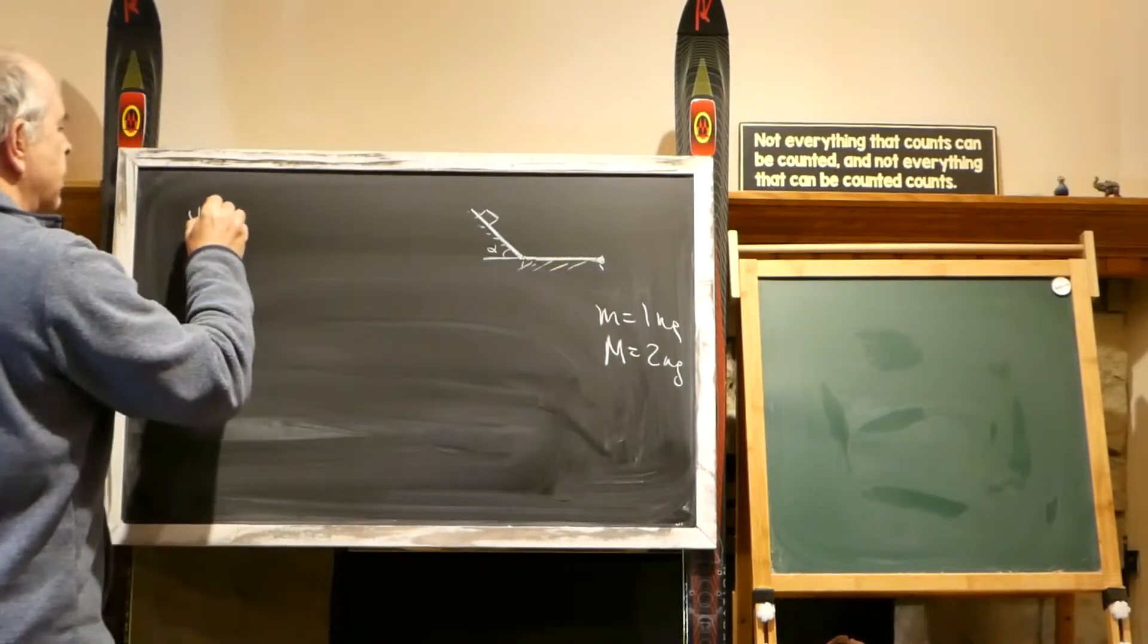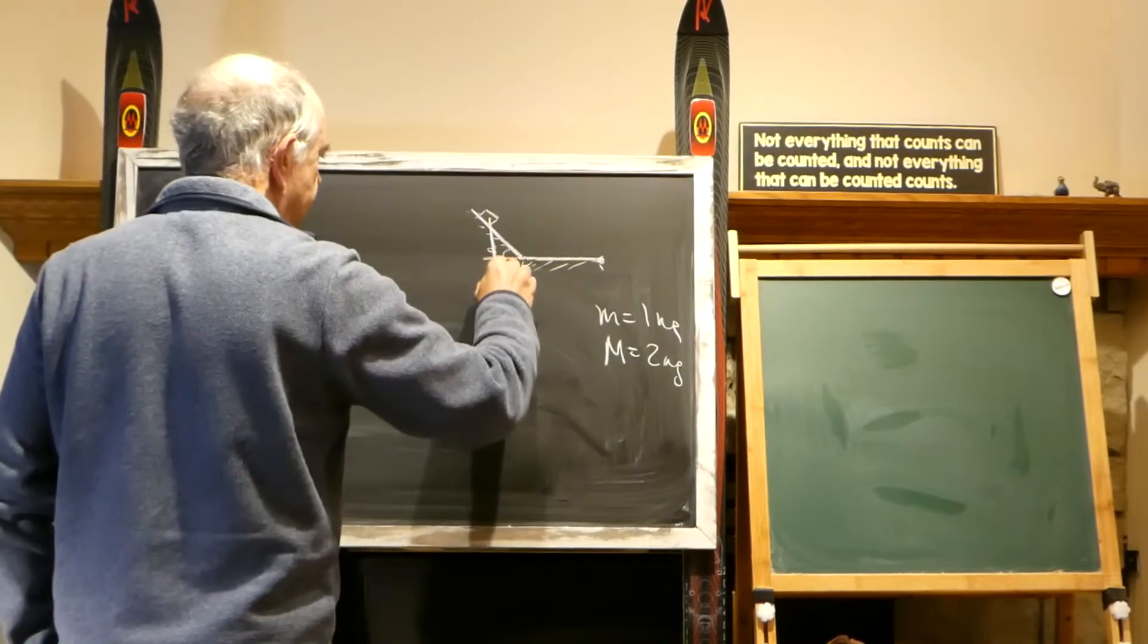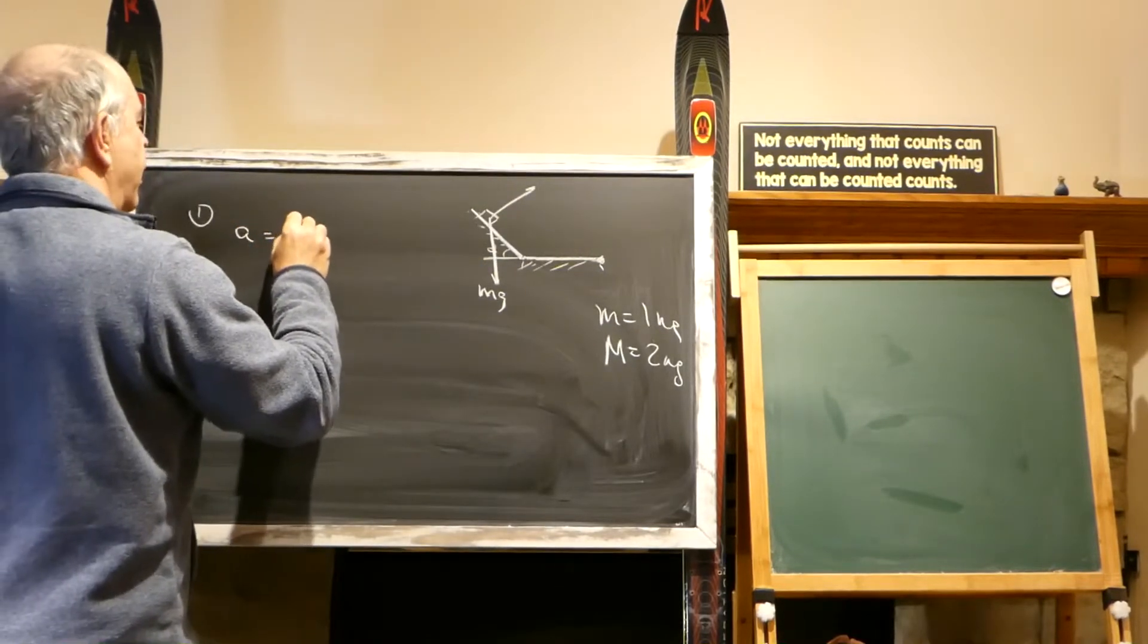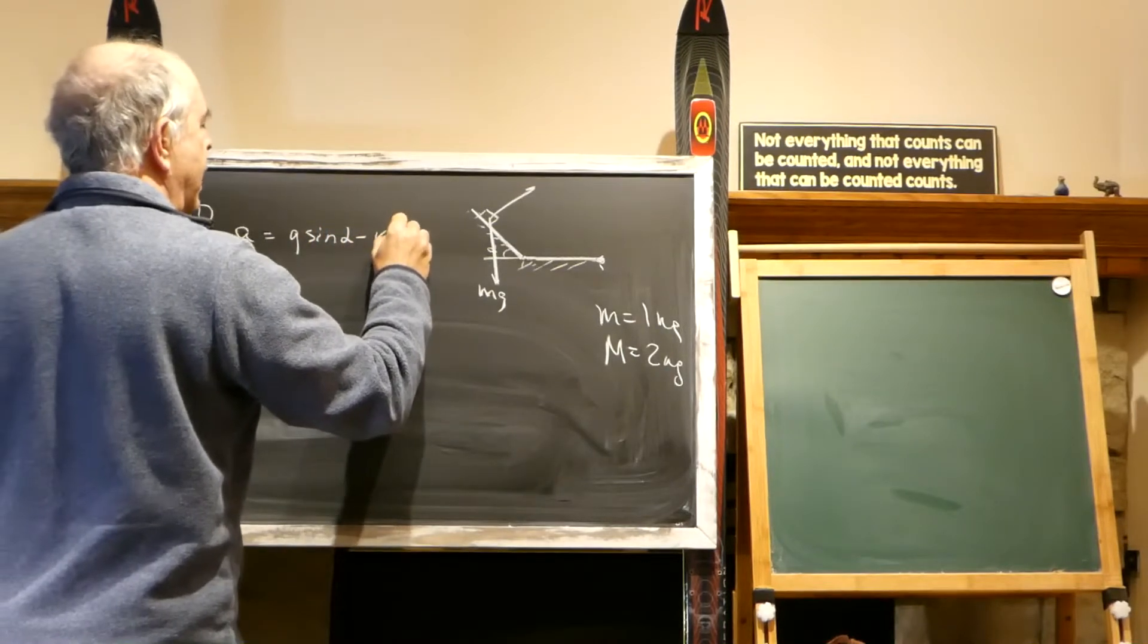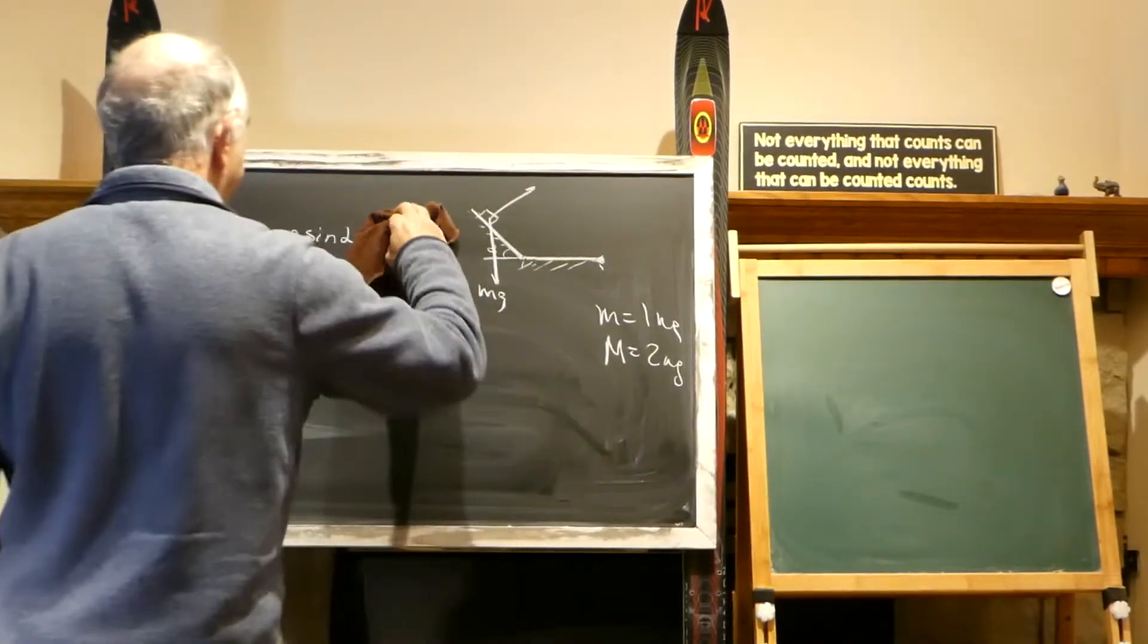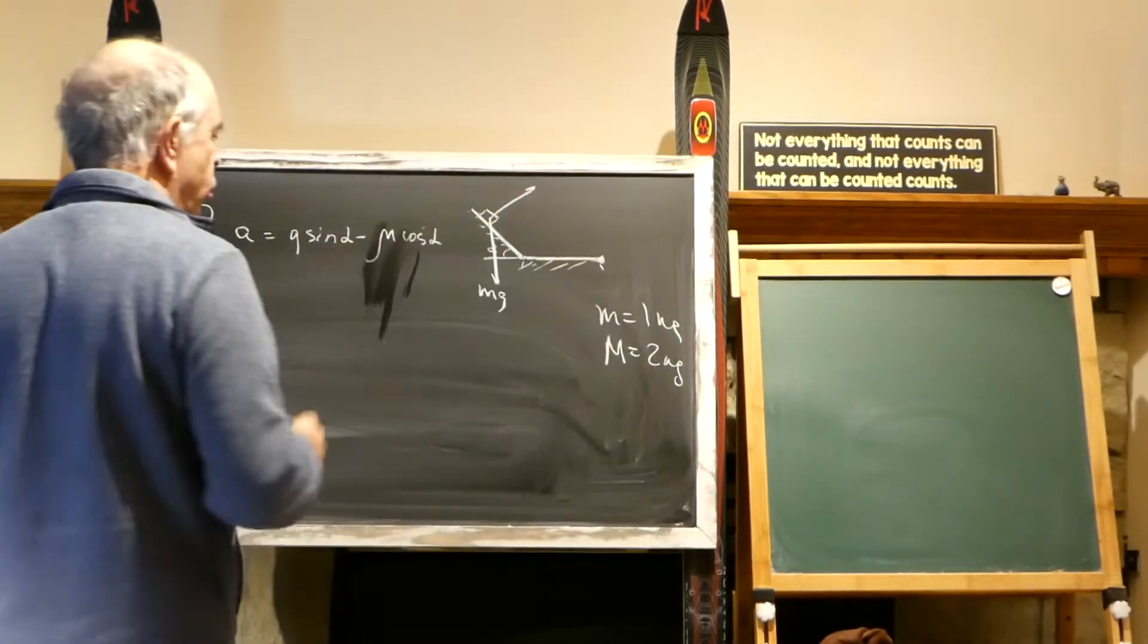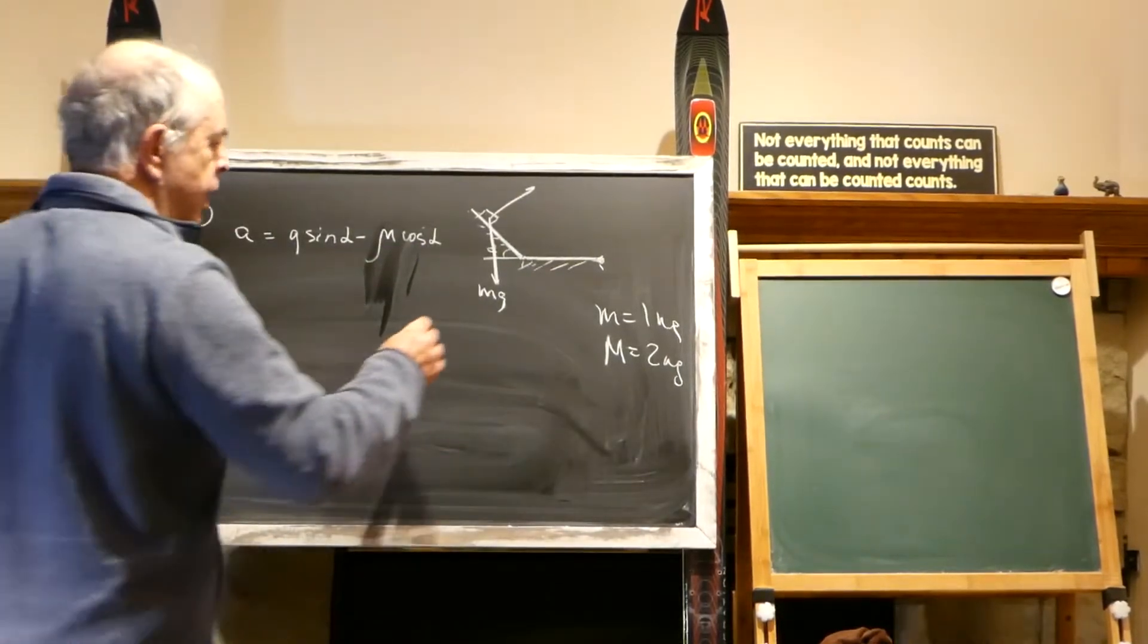So, first section is this, and of course I can repeat this very fast, but I can also write you a result very fast. I can tell you right away that acceleration for this board equals G sine alpha minus mu K cosine alpha. Mu is the friction coefficient.